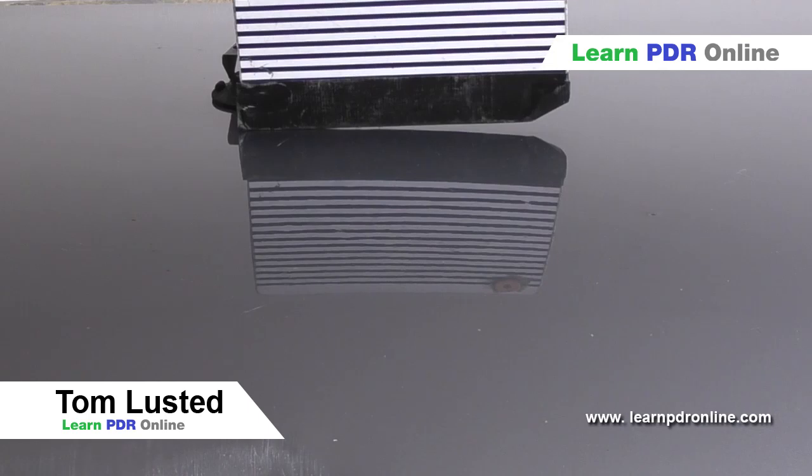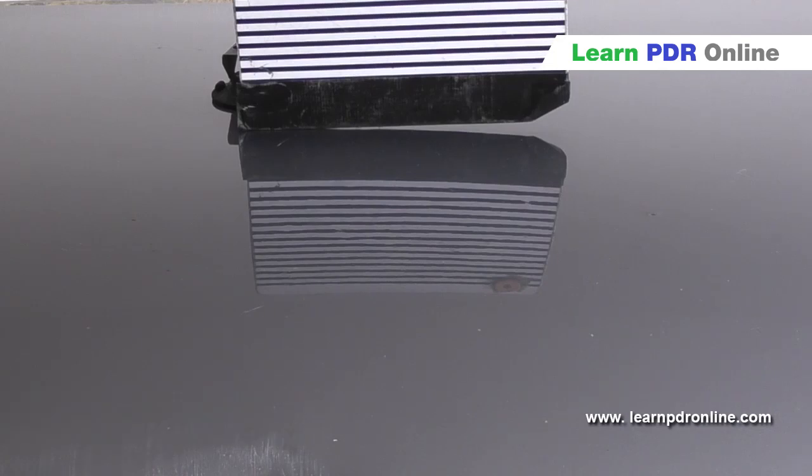So here we have a section of the bonnet panel that's clean. There is no dent or high spot. As you can see in the reflection of the line board, we have fairly straight lines across the panel.